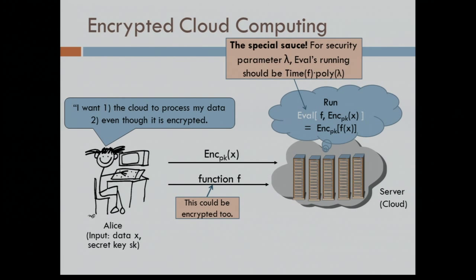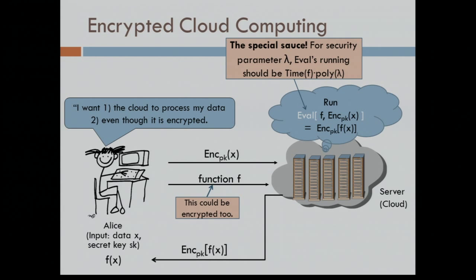This is really the special sauce — what's special about homomorphic encryption. It allows the cloud to do this kind of processing, and the time it takes to do this processing is essentially the same as the time it would have taken to do the same processing on the data in the clear, up to some polynomial factors in the security parameter. The cloud will return the encryption of the result to Alice, and then Alice can use her secret key to decrypt. That's the most straightforward application of computing on encrypted data.